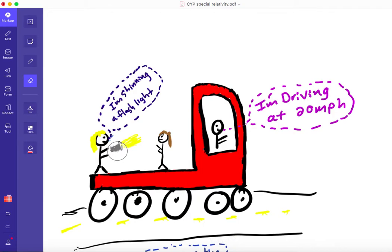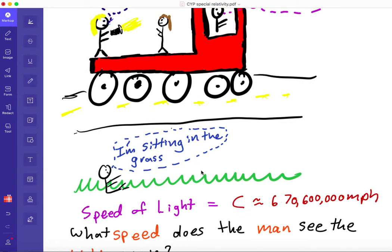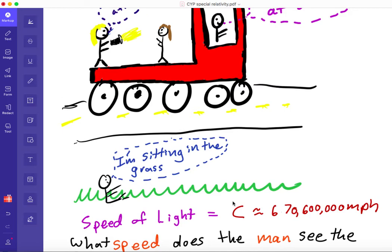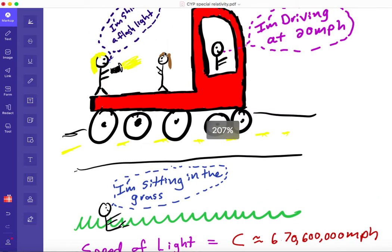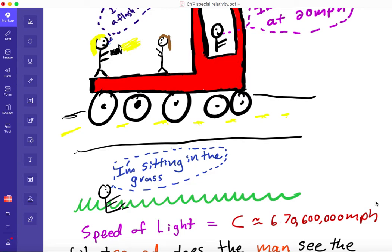Now, what if the girl, instead of a ball, she shines a flashlight? So what does this girl see the light moving at? Well, she sees it moving at the speed of light, which I'm going to call C, because this is a big number, about 670 million miles per hour. So she sees the speed of light moving at C. But then we also said that there's an experiment done that everyone sees light moving at the same speed. So this man also sees this beam of light moving at C. So what does this mean?